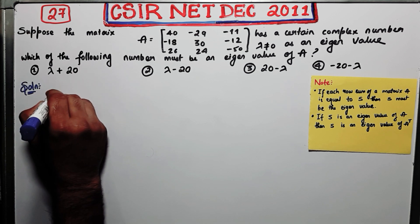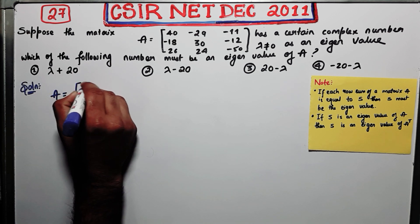So what is given to you. It's given to you that your matrix is like this.